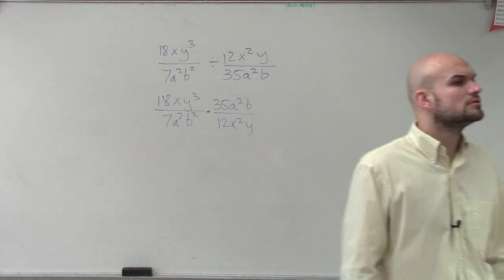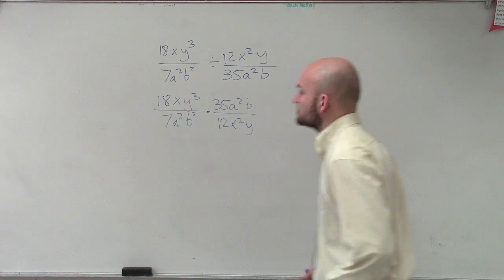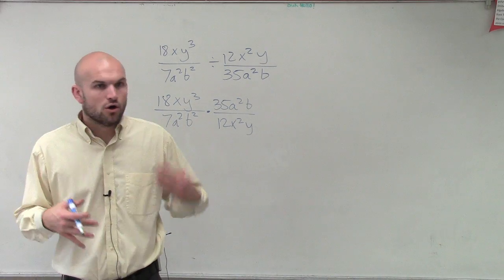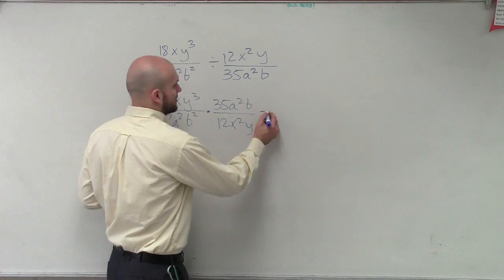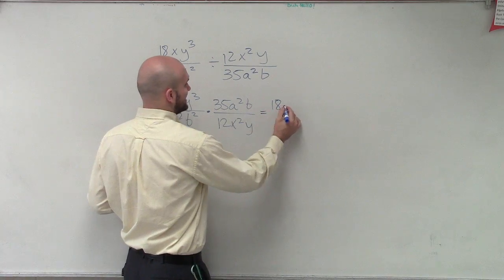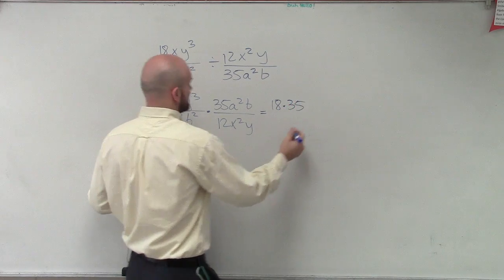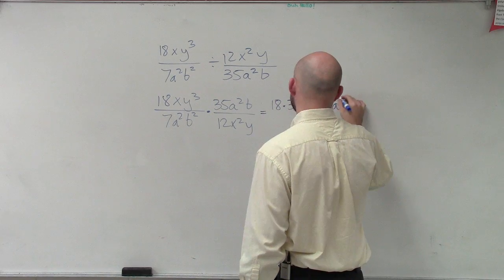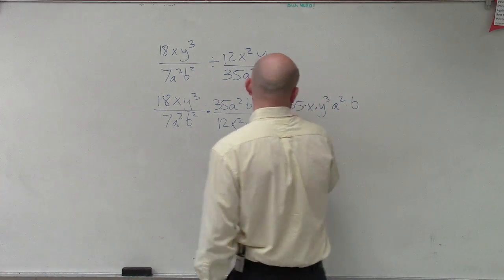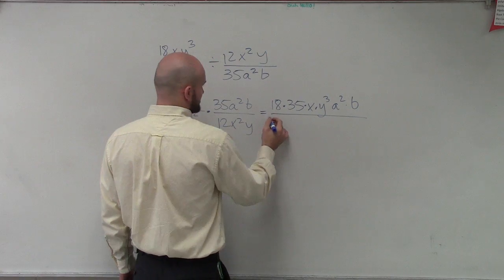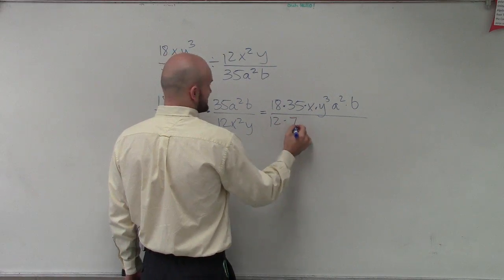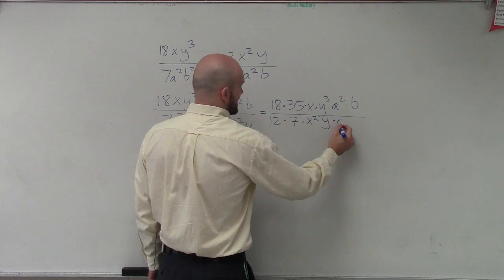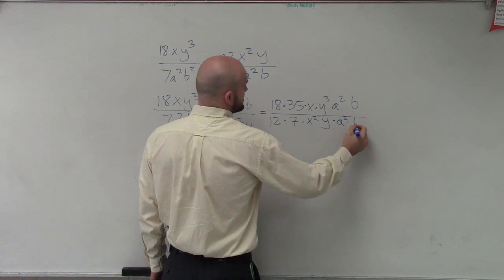Yes or no? You got it? Okay, good. So now we can multiply across. Now, ladies and gentlemen, you can do some simplifying before if you'd like to, or we can just multiply across and kind of see where we get. So I'm not going to simplify this yet. I'm just going to do 18 times 35 times x times y cubed times a squared times b all divided by, let's do 12 times 7 times x squared times y times a squared times b squared.